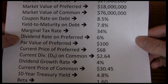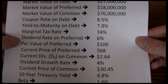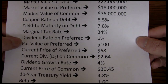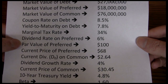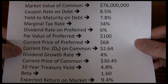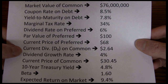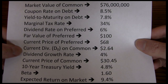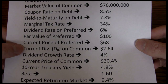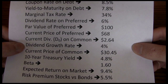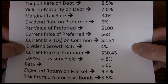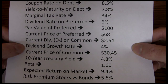We have the marginal tax rate, the dividend rate on preferred stock, and the par value of preferred stock. Sometimes I'll just give you the dividend for preferred stock, but in this example we're going to have to calculate that. We've got the current price of preferred and the current dividend on common stock. I may either give the current dividend, which is D0, or the forecasted dividend, which is D1, so be careful on that — make sure you read which dividend is presented. Next we have the growth rate on dividends, which is 4%. Note that preferred stock does not grow, so this refers to common stock dividend growth rates.